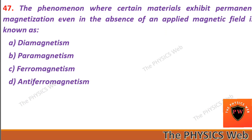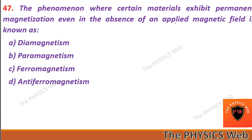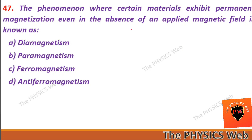Next, question forty-seven: the phenomenon where certain materials exhibit permanent magnetization even in the absence of an applied magnetic field is known as ferromagnetism. So C is your correct option.